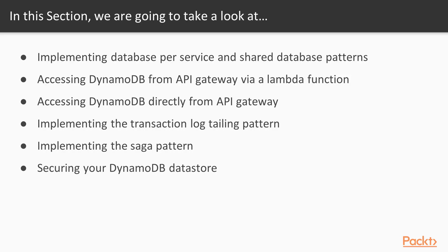In this section we are going to look at implementing database per service and shared database patterns, accessing DynamoDB from API Gateway via a Lambda function, accessing DynamoDB directly from API Gateway, implementing the transaction log tailing pattern, implementing the saga pattern, and securing your DynamoDB data store.